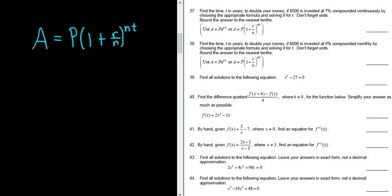So monthly means n is equal to 12. If it said annually, n would be 1. If it said semi-annually, n would be 2. And if it said quarterly, n would be 4. So monthly is every month, so n is 12.